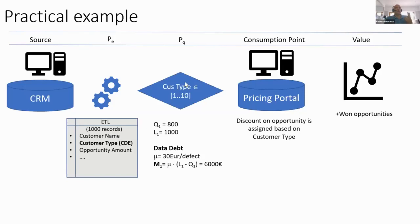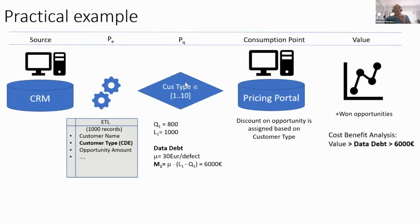In the paper, working with some assumptions using a move value — calculated using average cost of an employee and average time to fix a defect — we get a round number of 6,000 euros. So to achieve true value from winning opportunities, I have a threshold: I need to get at least 6,000 more out of those won opportunities, otherwise the cost-benefit analysis doesn't stack up. This is how we create a quantifiable way to connect company value to what's happening in the data supply chain and the inherent quality level of data.